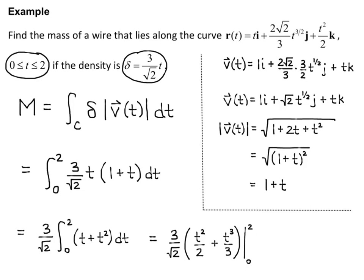This comes out to 14/√2, which simplifies to 7√2. So the mass of that thin wire along the curve is 7√2.